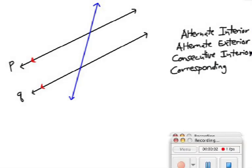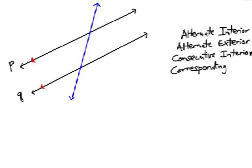Let's remember what kind of angles are formed when we have a transversal in blue intersecting two parallel lines. If I ask you a question, press pause so that you can try to answer the question before I say it. First question is alternate interior angles — I want you to put a star by the alternate interior angles. Do you know where they are?